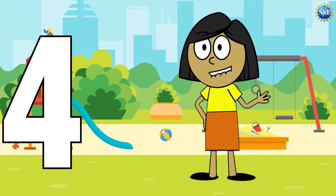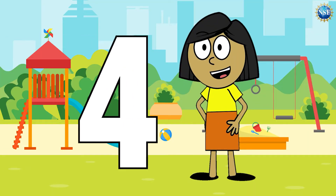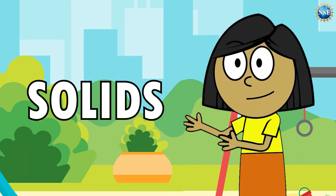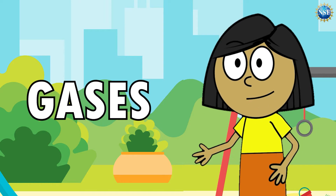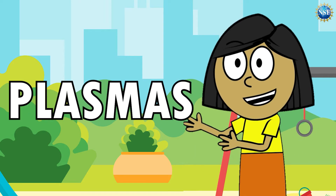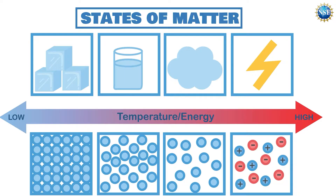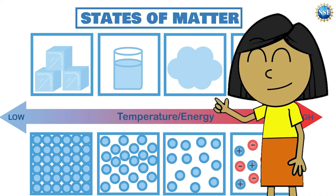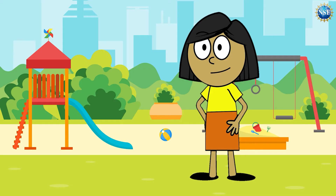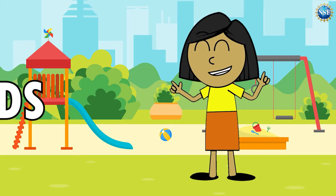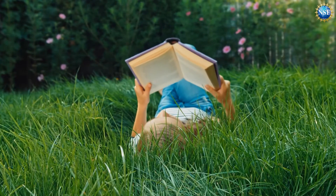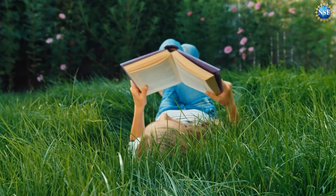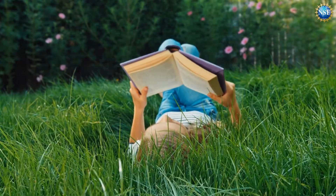There are four different forms matter can be in: solids, liquids, gases, and plasmas. These are called the states of matter, each with its own unique identity. The first state is solids — that's like the ground, a book, or even a playground.